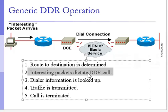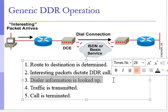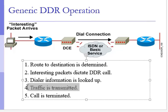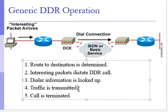In the next step, the data information is looked up in the table managed by the hub — the DCE — which checks the destination in its database. If the connection is already established, data is transmitted over that link; if not, the hub establishes the connection for you. After this, if time or traffic ends, the call is terminated.